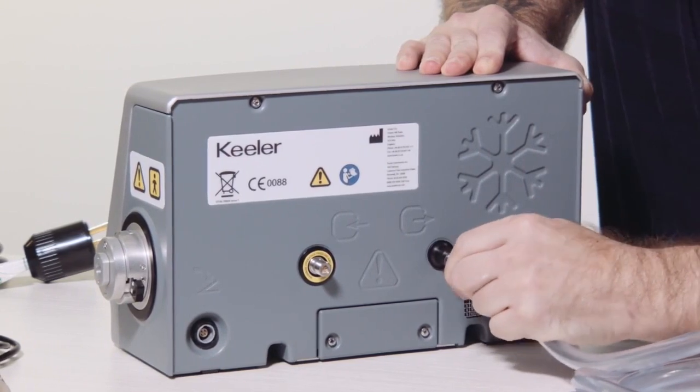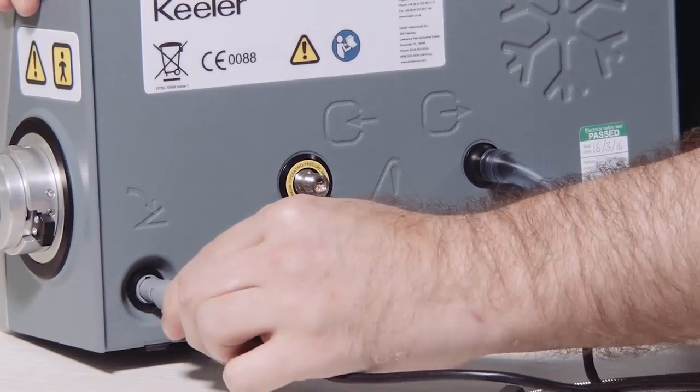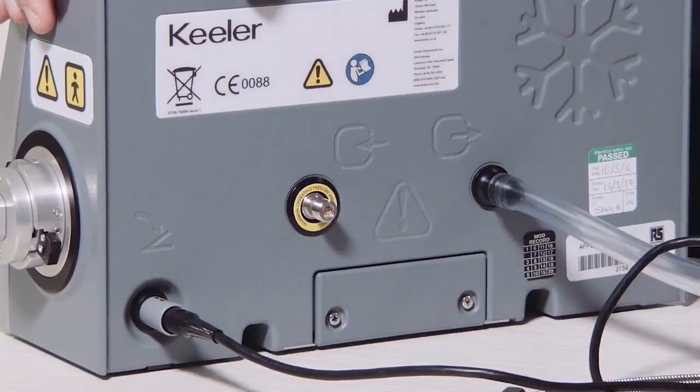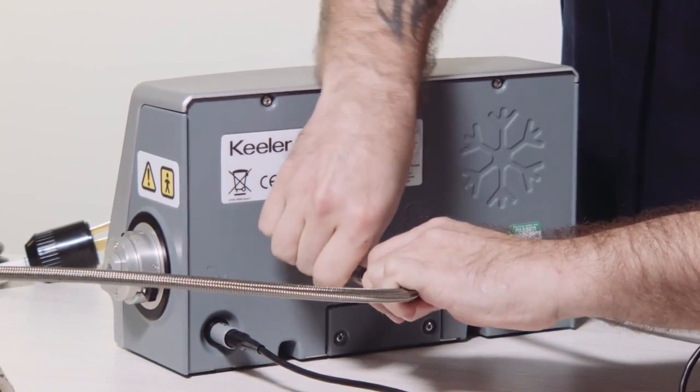Connect the exhaust hose from the gas exhaust to a ventilated area. Connect the foot switch to the console. Install the high-pressure gas hose to the inlet connector at the rear of the system.